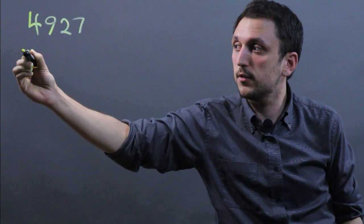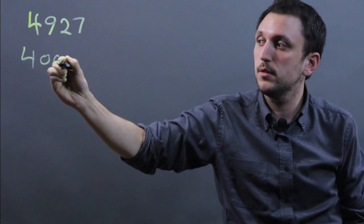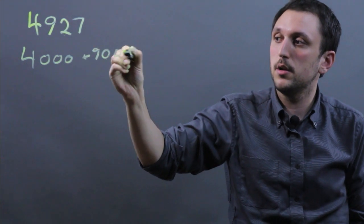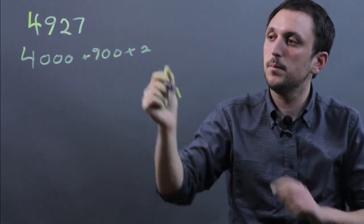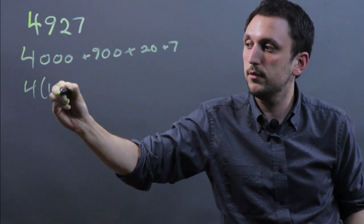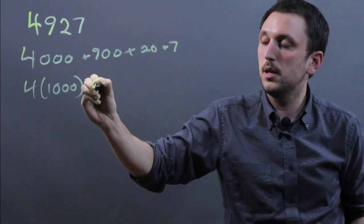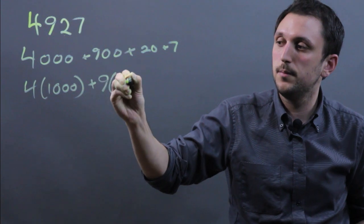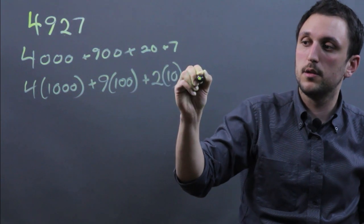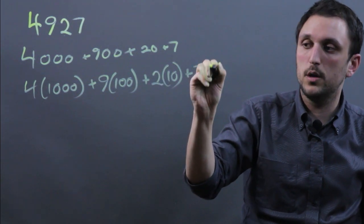So let's take the number 4,927. Now, with this number, in expanded form, normally we'd say 4,000 plus 900 plus 20 plus 7, or 4 times 1,000 plus 9 times 100 plus 2 times 10 plus 7 times 1.